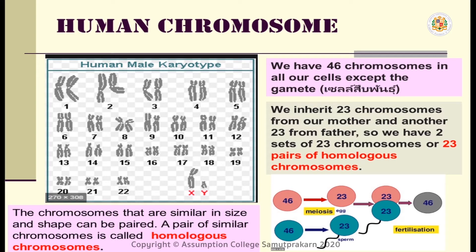Let's proceed to the human chromosome. As we know, we have 46 chromosomes in all our cells, except the gamete. We inherit 23 chromosomes from our mother and another 23 from our father, giving us two sets of 23 chromosomes, or 23 pairs of homologous chromosomes. Chromosomes that are similar in size and shape can be paired, and a pair of similar chromosomes is called homologous chromosomes.